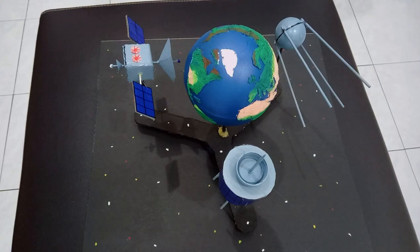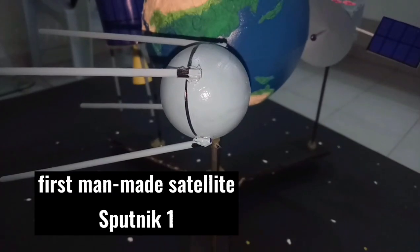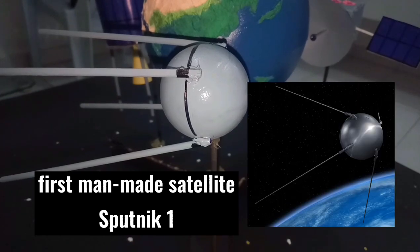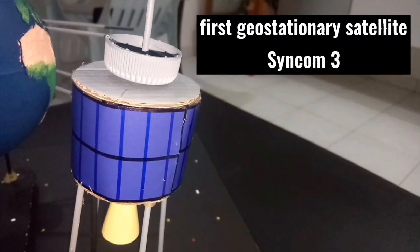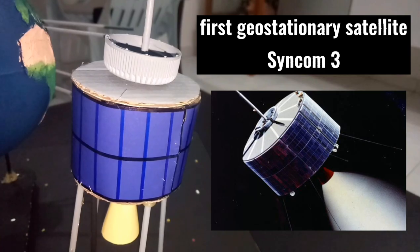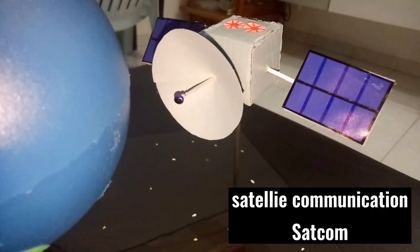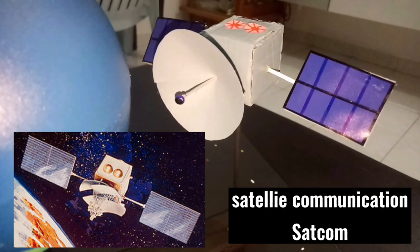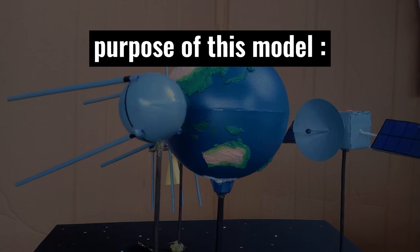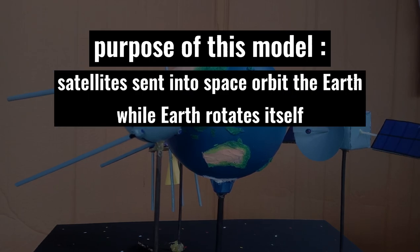Here is the model of orbiting satellites around the Earth that I've made. The satellites include the first man-made satellite, Sputnik-1, the first geostationary satellite, Syncom-3, and the satellite communication by the US, SATCOM. This model is used to show satellites that have been sent into space, orbit around the Earth, while the Earth rotates itself.